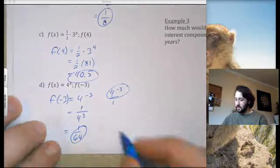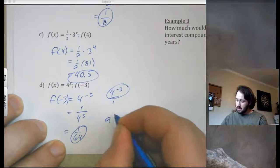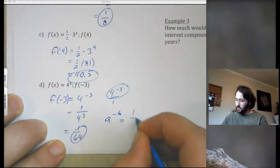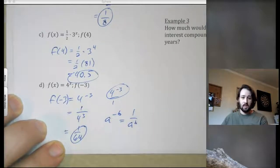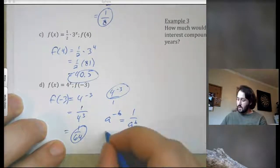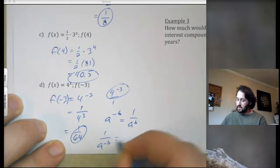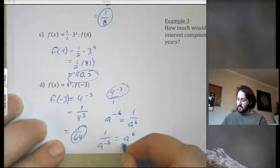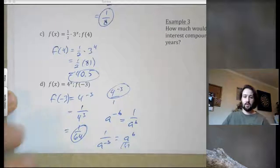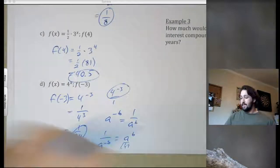So again, if you see a negative exponent like a to the negative b, that can be written as 1 over a to the positive b. Vice versa as well. If we had 1 over a to the negative b, it would be the same thing as just a to the b, kind of over 1, but you don't really need that part. So just a to the b.